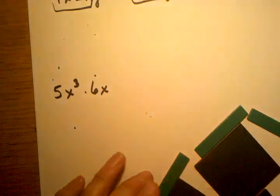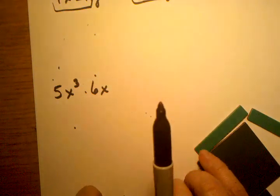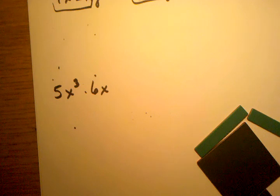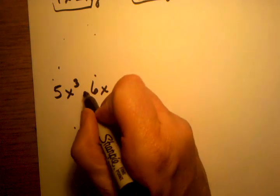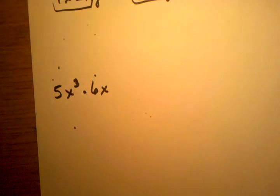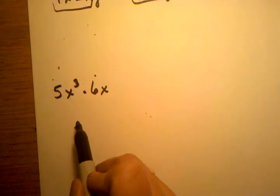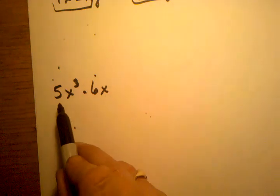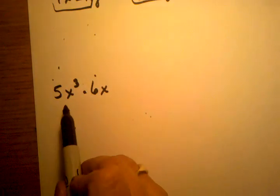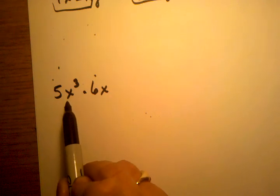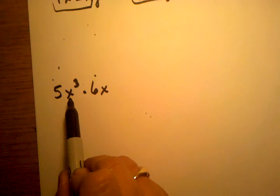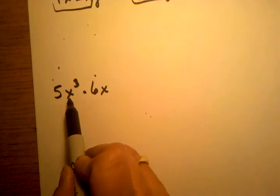But another kind of problem you might have is—we did these kinds of problems when we were working with exponents. But what if you end up with something like 5x cubed times 6x? So we have 5x cubed times 6x. Now we just want to use our algebraic knowledge of what happens to this kind of problem. It's hard to use tiles. We don't have a tile representing x cubed, at least not yet. Not in our collection here.